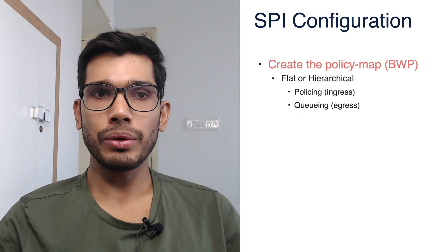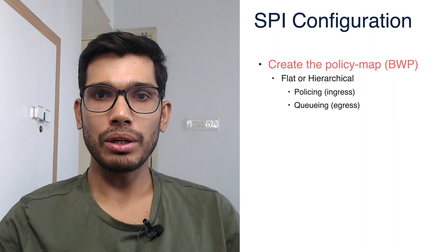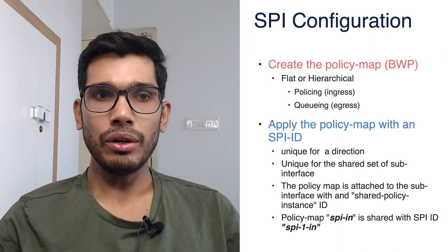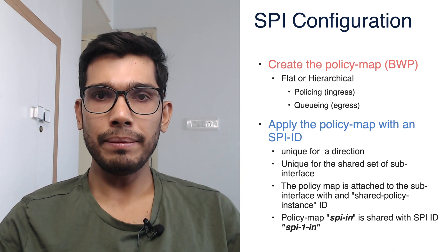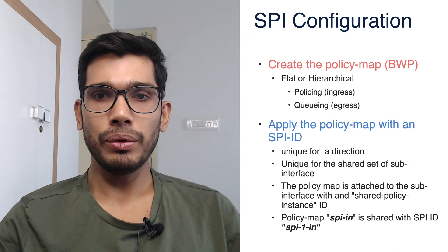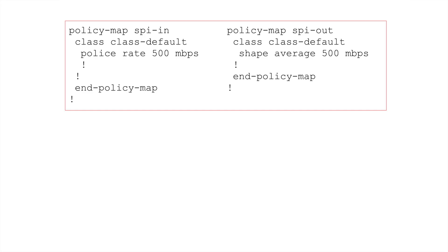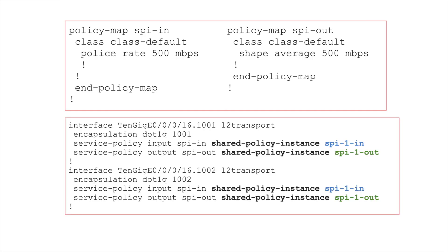Here is how we configure an SPI. The first step is to create the policy map that we want to share. Then we apply the policy map to the sub-interface along with a shared policy instance ID. Along with the service policy input, the shared policy instance keyword is used and we give a unique ID per direction. Let's take a look at how SPI looks in a live router.